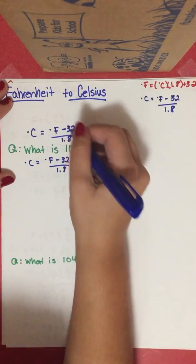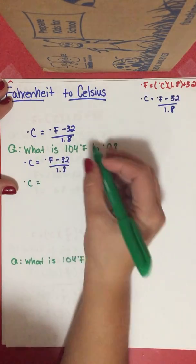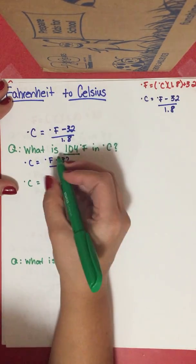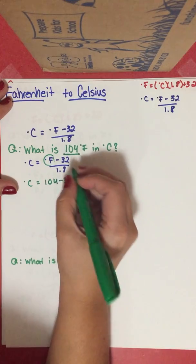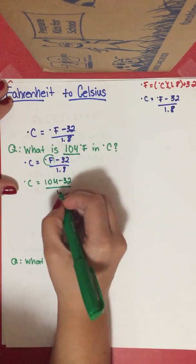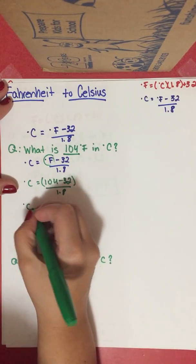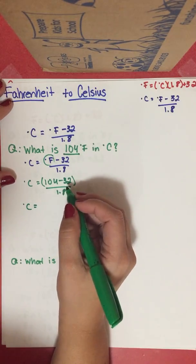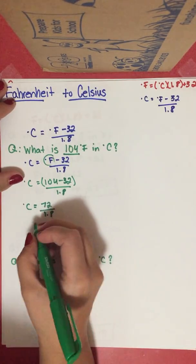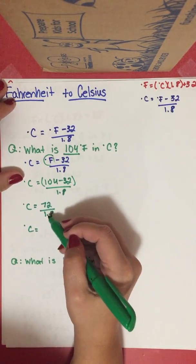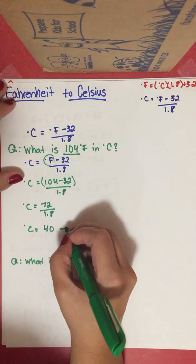Degrees Celsius equals — again we're only taking the number, not the label — so 104 minus 32 over 1.8. I'll put the numerator in parentheses since that's the first thing we solve: 104 minus 32 is 72. So 72 divided by 1.8 is 40. Our final answer is 40 degrees Celsius.